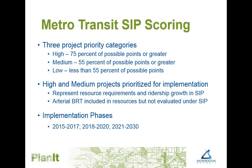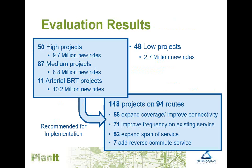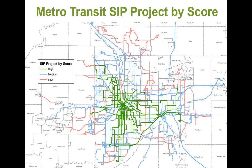SIP projects are assigned to one of three implementation phases based on factors like when a related transitway or other project is projected to open. We received project ideas from internal departments, city and county staff, and from the general public through a robust engagement process. In total, 185 projects were evaluated, with 148 scoring high enough to be included in the recommended plan. Of these, almost 40% expanded coverage, nearly 50% improved frequency, and around 35% increased the span of service. This map gives a high-level look at all the improvements considered, differentiated by score, dispersed throughout the entire region across all route types — express, suburban, and urban local.